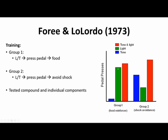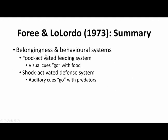This tells us that light is easier to learn about when associated with food, and a tone is easier to learn about when associated with avoiding shock. We can link this to belongingness and behavioral systems: the food-activated feeding system suggests visual cues go with food, as most species in these studies search for food using their eyes. The shock-activated defense system suggests auditory cues go with predators. Different species that hunt with auditory or olfactory cues might show very different results.